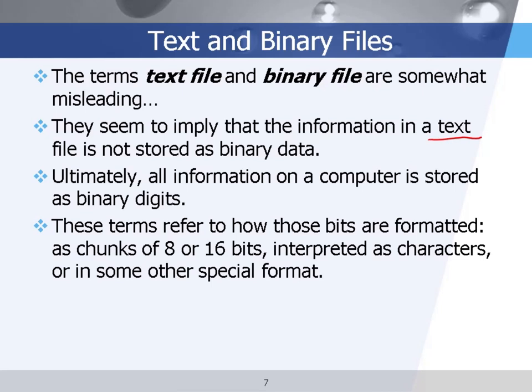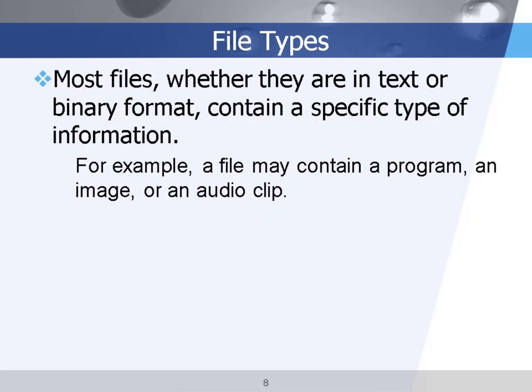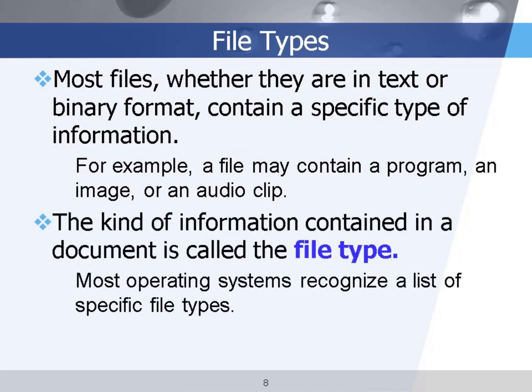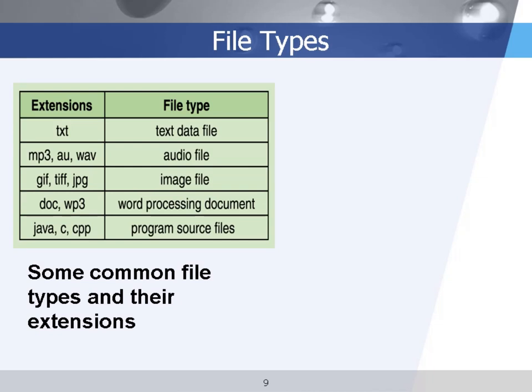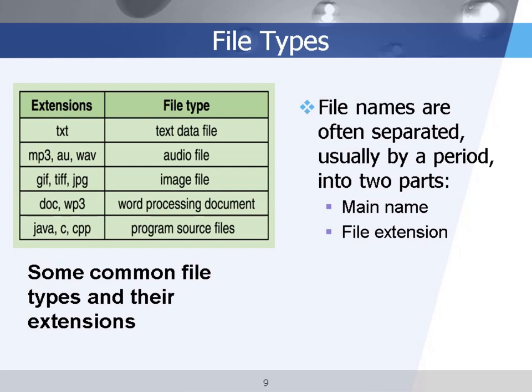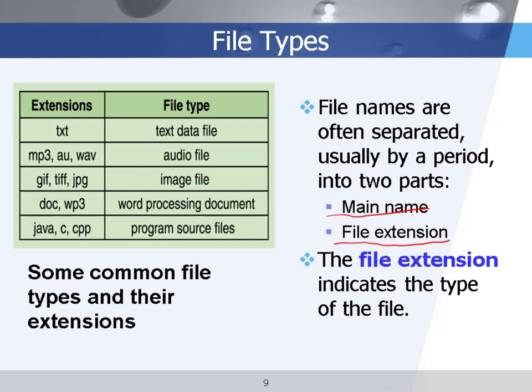Most files, whether in text or binary format, contain a specific type of information — for example, a program, an image, or an audio clip. We can give each file a tag: for example, txt, mp3, gif, doc, java, c, cpp files. These are all file extensions. A file name usually contains two parts separated by a period — the first part is the file name and the second part is the file extension, which indicates the file type.